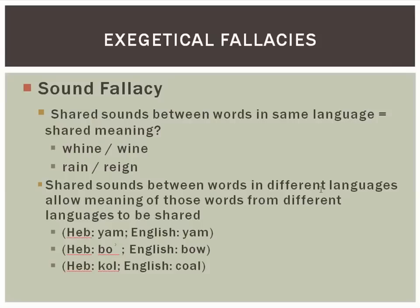The second variety: shared sounds between words in different languages. Do those allow meanings to be transferred from one language to the other? Does one set of sounds in one language inform our understanding of the same set of sounds in another? You'll see this everywhere — people on the internet, like William Henry, does this sort of thing. Actually, William Henry does all of these fallacies frequently. The fact that I can make a set of sounds in English does not mean that the same set of sounds in Chinese carries the meaning that my English word does, and vice versa.